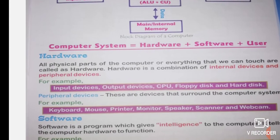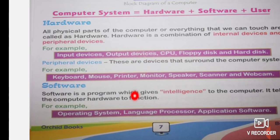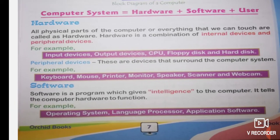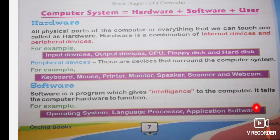Software is a program which gives intelligence to the computer. It tells the hardware how to function. Examples of software include operating system, language processor, and application software. For example, Windows XP is an operating system, which comes under the concept of operating system software.